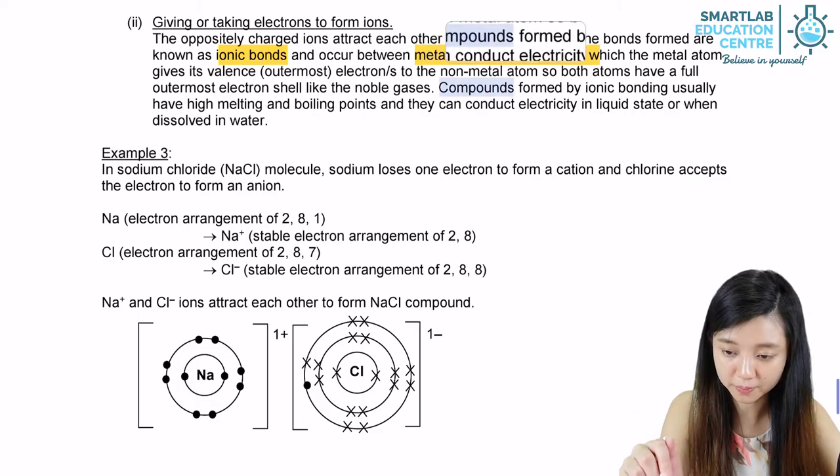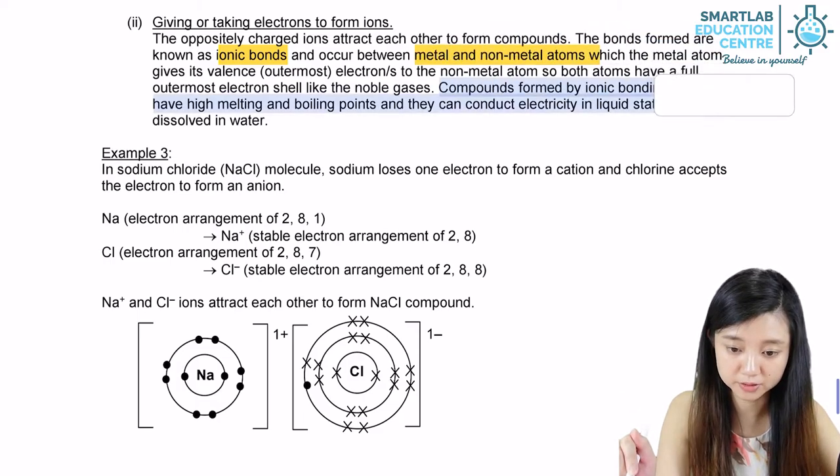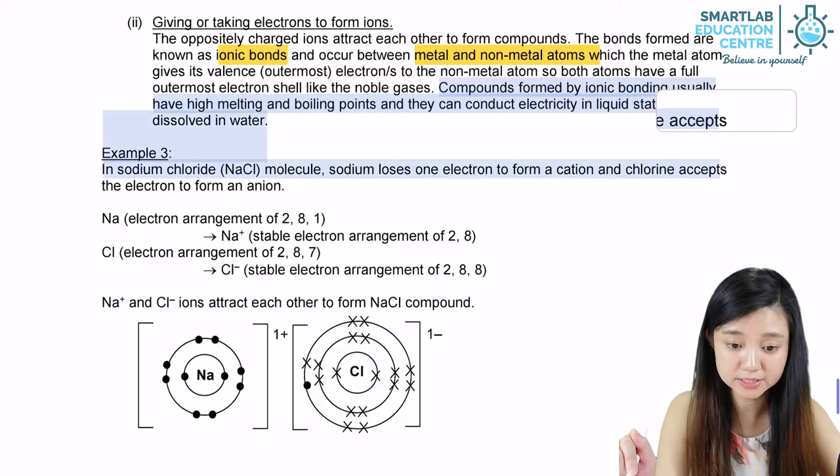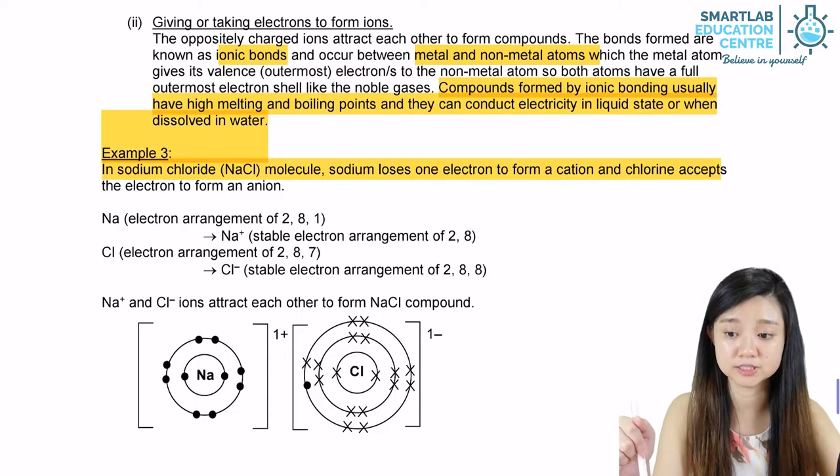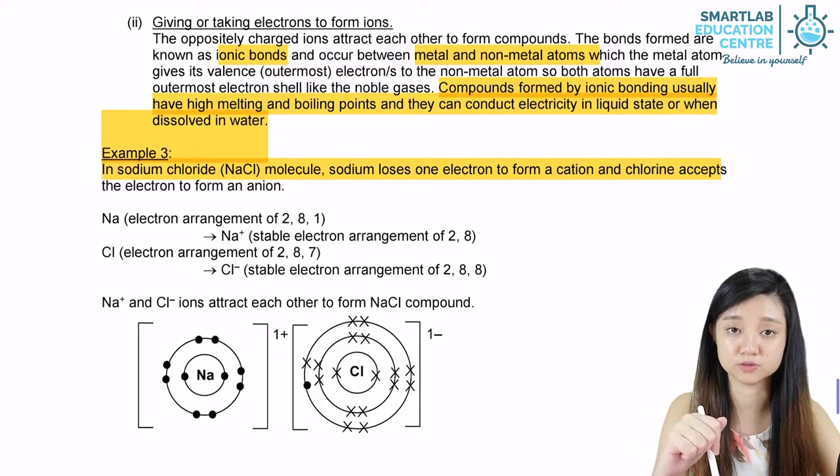Compounds formed by ionic bonding have high melting and boiling points, and they can conduct electricity in the liquid state or when dissolved in water.